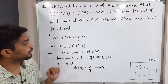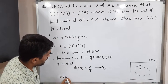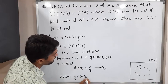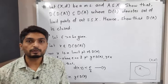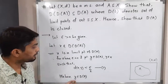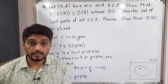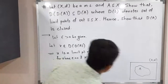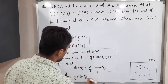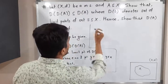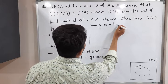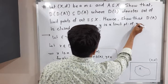We have Y belonging to D(A). D(A) is the derived set, the set of all limit points of A. So Y belonging to D(A) means Y is a limit point of A.